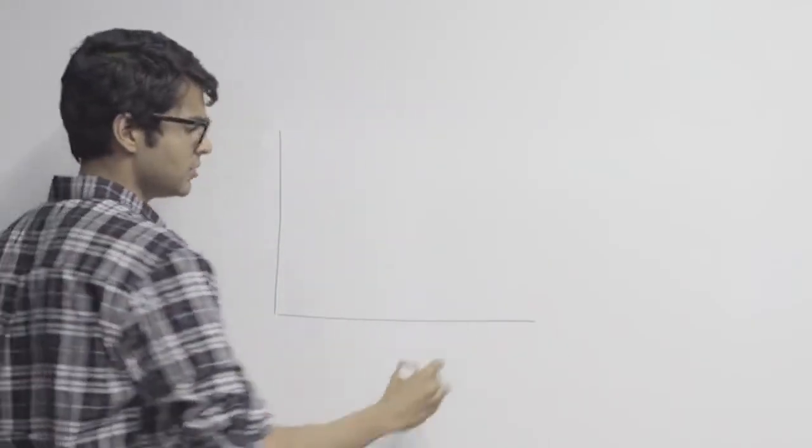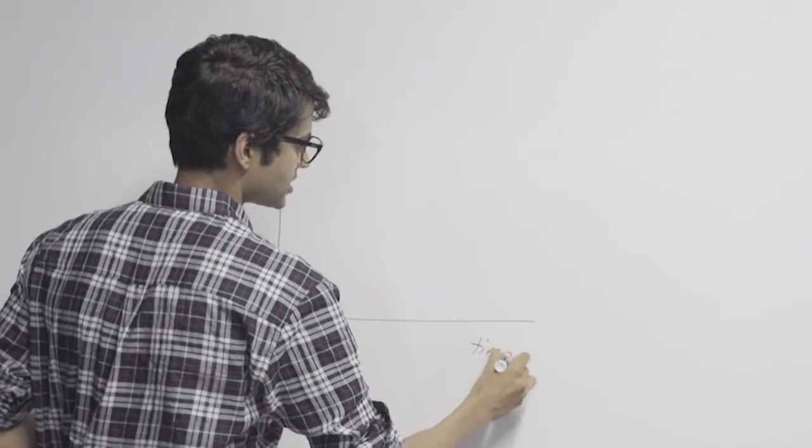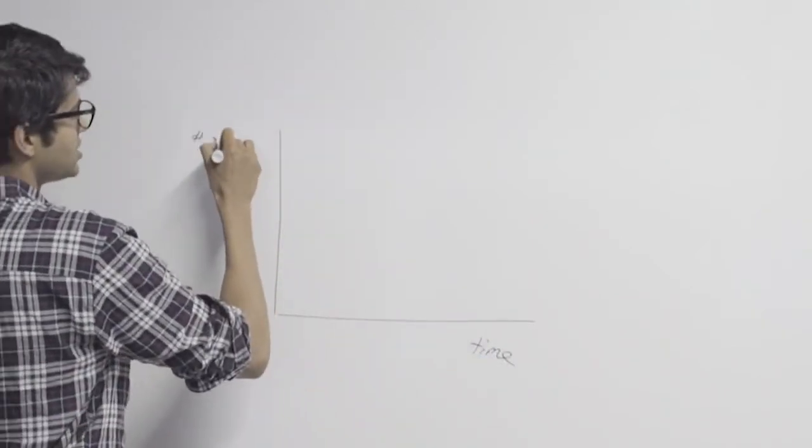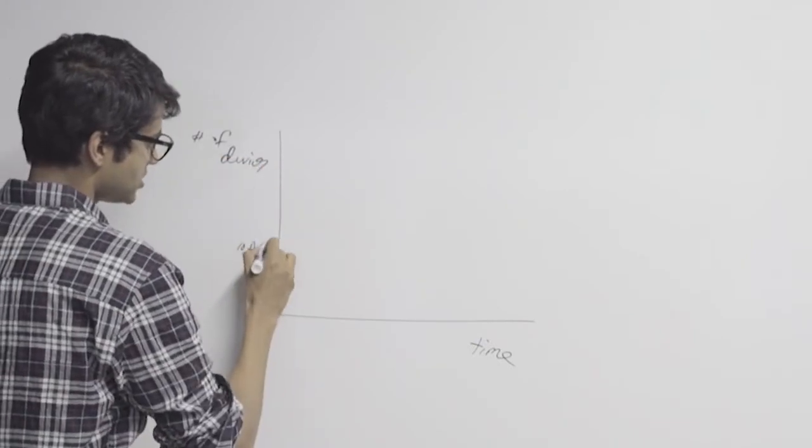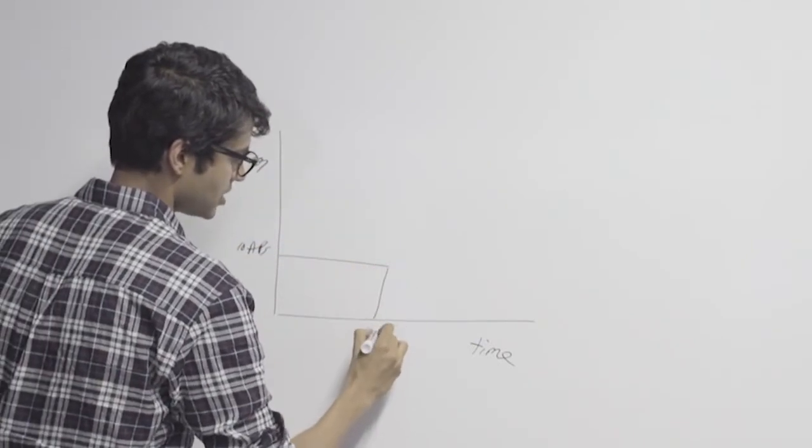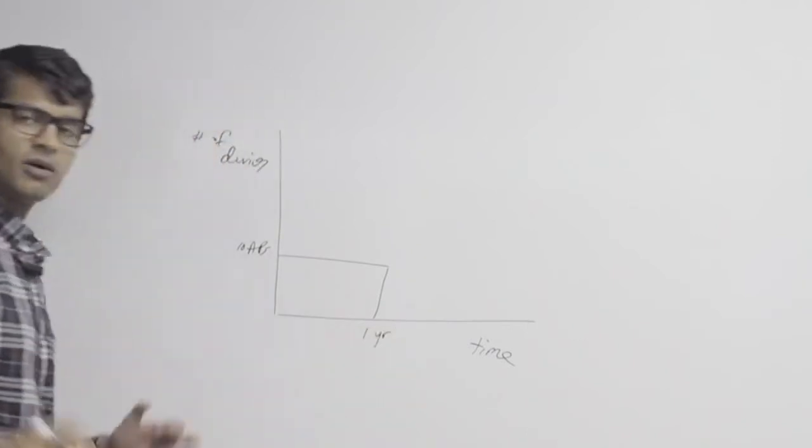How would that look visually? Well, if we show time on the x-axis and number of devices on the y-axis, you will have 10 access points with a one-year license co-terminating when you're out.